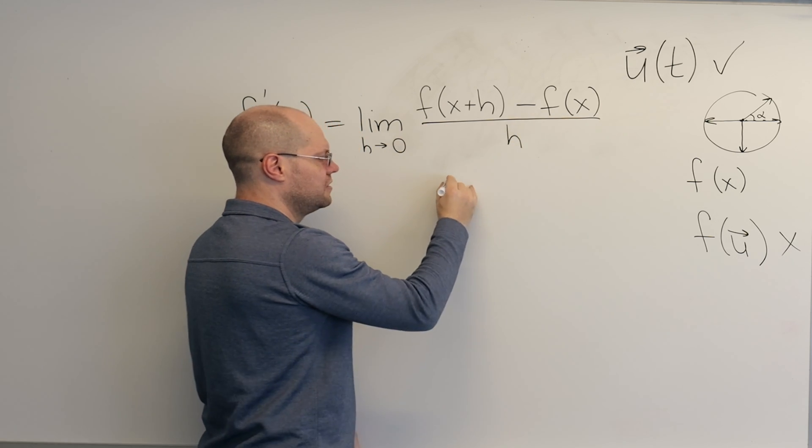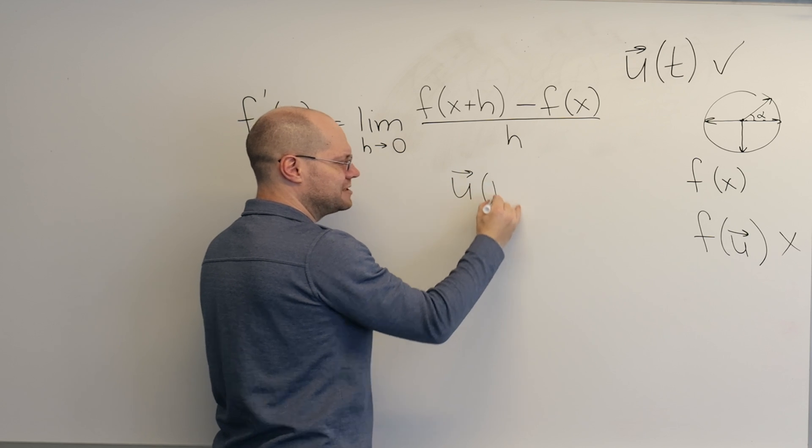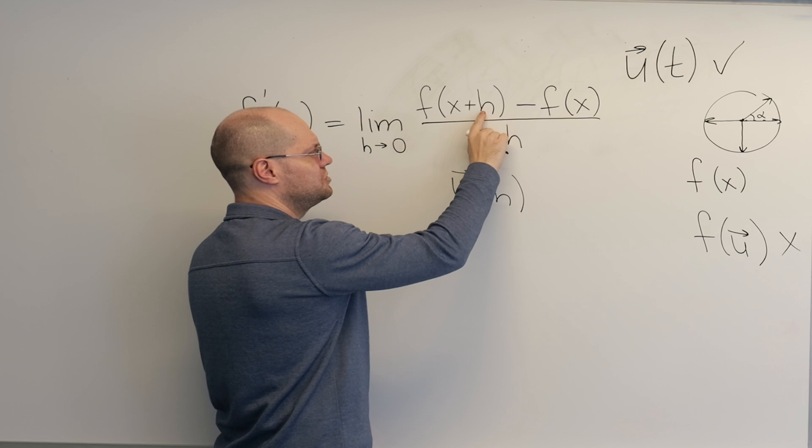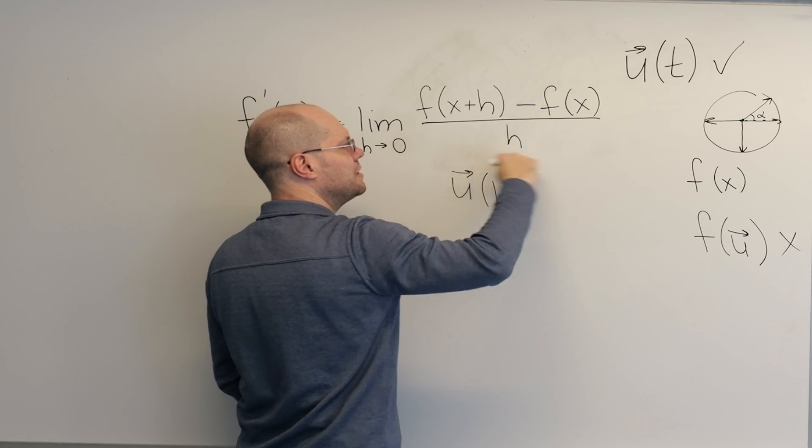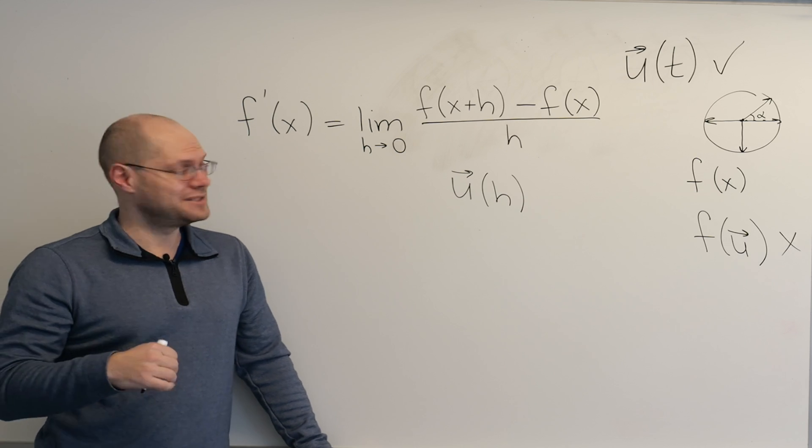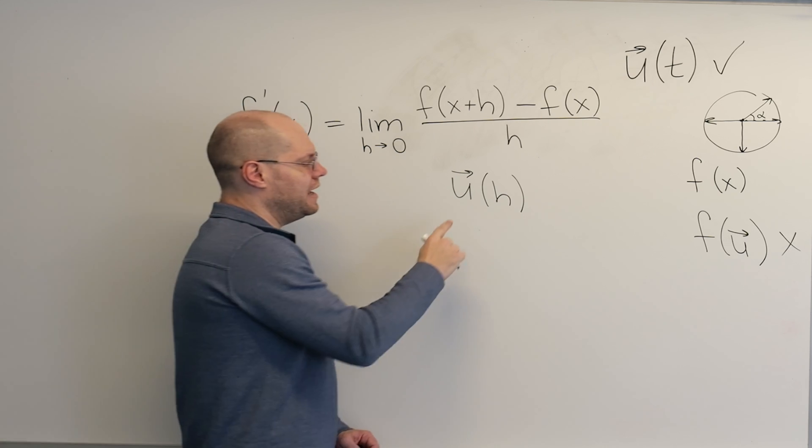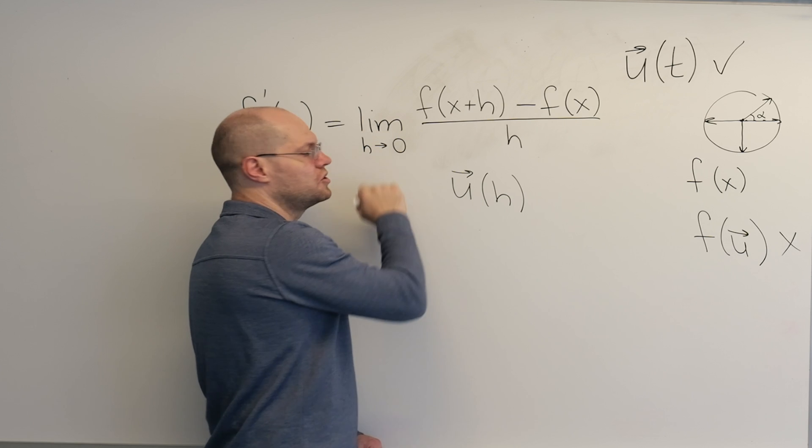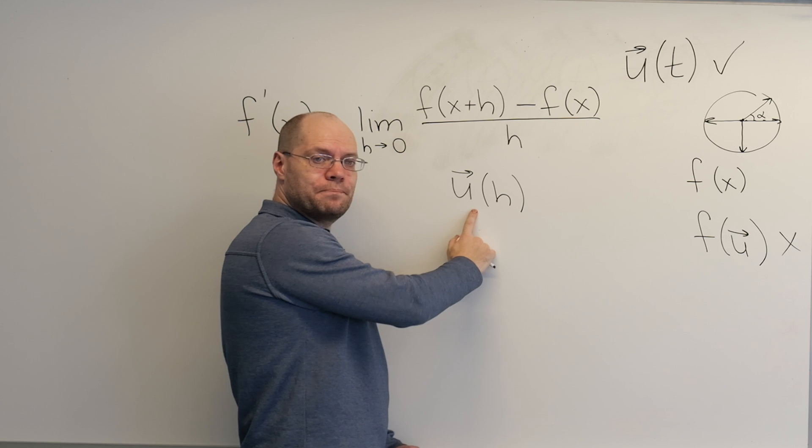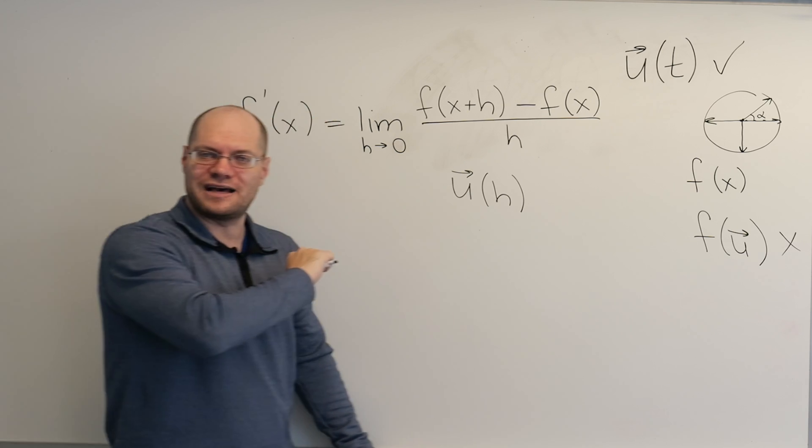And so now you get sort of like another function. This becomes like a function u of h, right? Because at any given point x, if you think of that as fixed and h is variable, when you evaluate this ratio, well, you keep getting a new vector each time. We'll see an example of that. Okay? And now you have to say, is it going to a particular limit? Can vector-valued functions approach a limit? What would we need for that?